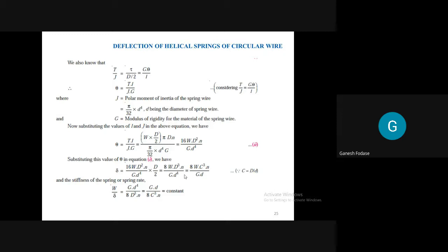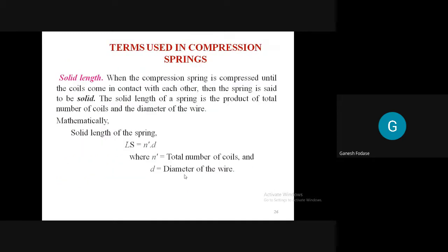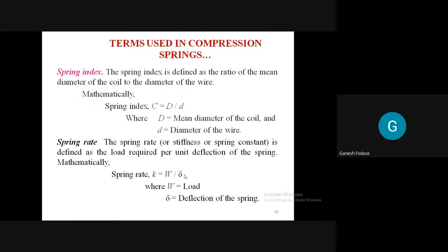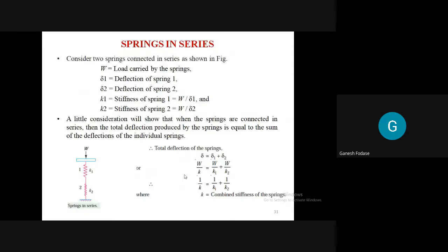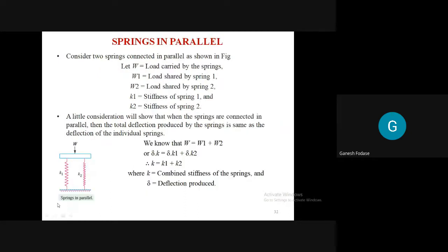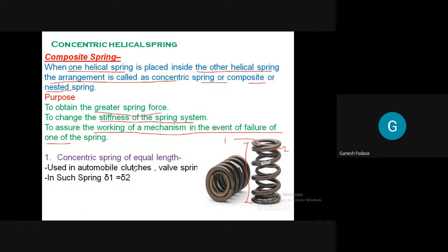We also covered important terms like spring index, spring rate, solid length, free length, pitch, and then discussed springs in series and springs in parallel. For springs in series, k equals k1·k2/(k1+k2), while for springs in parallel, the equivalent stiffness equals k1+k2. That covers all topics discussed up to now. Next, we discuss the topic of concentric helical springs.